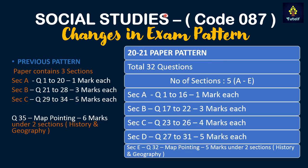Next is Social Studies with code 087. Previously the paper contained three sections: A, B, and C. Section A had questions 1 to 20, one mark each. Section B had questions 21 to 28, three marks each. Section C had questions 29 to 34, five marks each. There was also question 35, a map-related question worth 6 marks, covering both History and Geography.